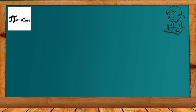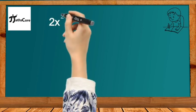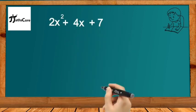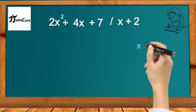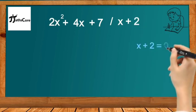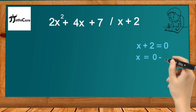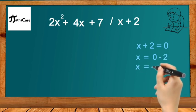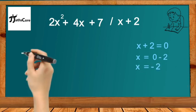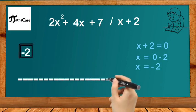The first example is 2x² + 4x + 7 divided by x + 2. In the first step, we need to find out the value of x, so we compare x + 2 with 0. x + 2 = 0 means x = -2. We got the value of x, and we need to take that value as the divisor.